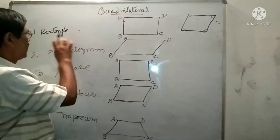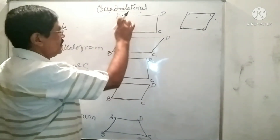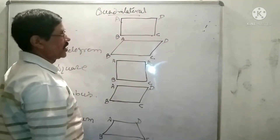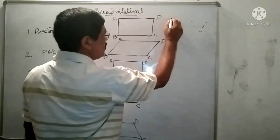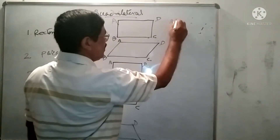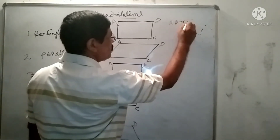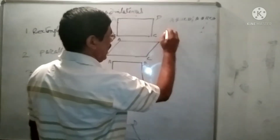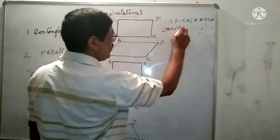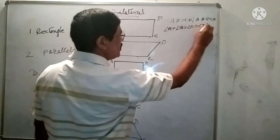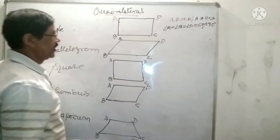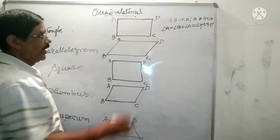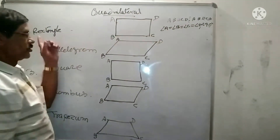Our first quadrilateral is a rectangle. A quadrilateral whose opposite sides are equal and parallel, and all four angles are 90 degrees, is known as the rectangle. So in rectangle ABCD, AB equals CD and AB is parallel to CD. And all four angles — angle A equals angle B equals angle C equals angle D equals 90 degrees.